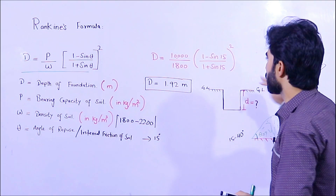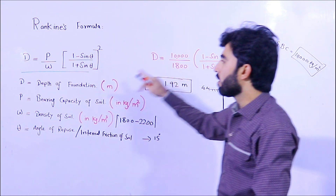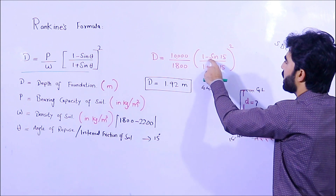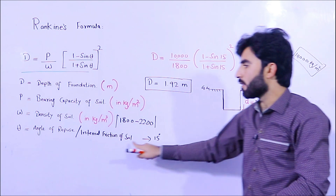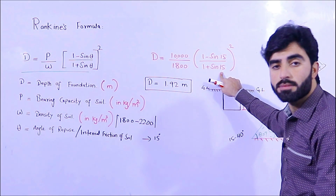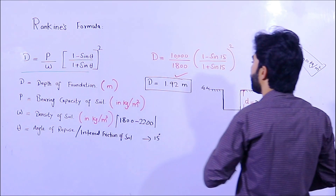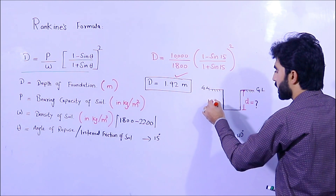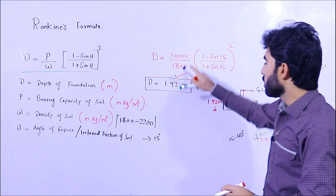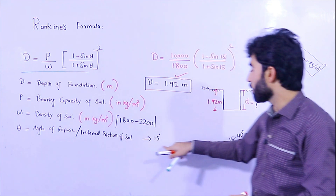So let's put the values into Rankine's formula to find the depth of foundation. D = (p / w) × ((1 - sin θ) / (1 + sin θ))². I am using: bearing capacity p = 10,000 kg/m², density w = 1800 kg/m³, and angle of repose θ = 15 degrees. When you do the calculation with a calculator, you get D = 1.92 meters. So the depth of foundation should be 1.92 meters when bearing capacity is 10,000 kg/m², density is 1800 kg/m³, and angle of repose is 15 degrees.